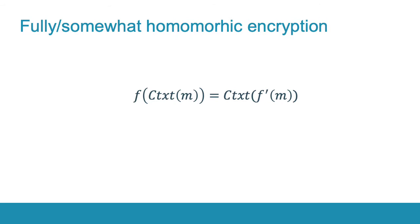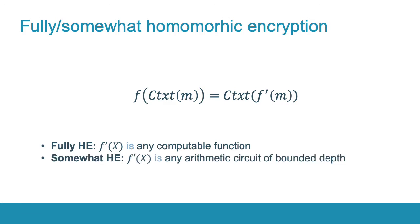More precisely, homomorphic encryption is an encryption scheme that allows computations on encrypted data without decryption. The most advanced type is fully homomorphic encryption that can compute any computable function on encrypted data. But there is also somewhat homomorphic encryption that can compute any arithmetic circuit of bounded depth. In practice, somewhat homomorphic encryption is more efficient than fully homomorphic encryption. In this work, we focus on this type.